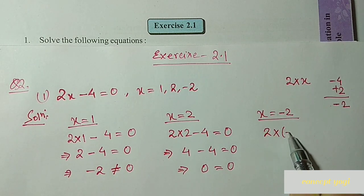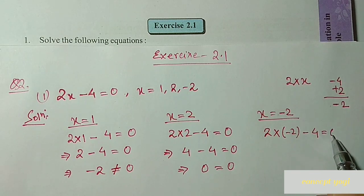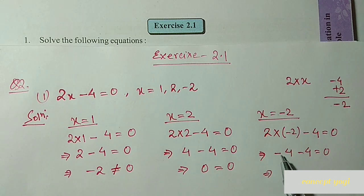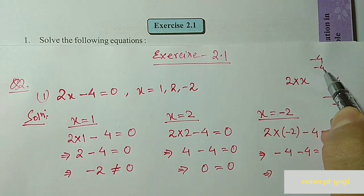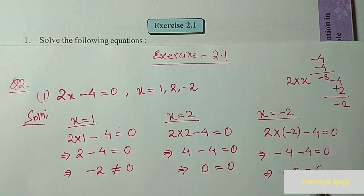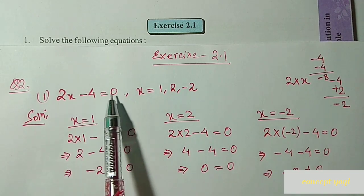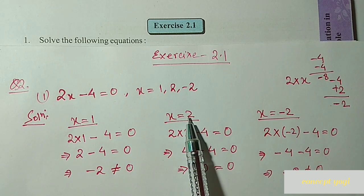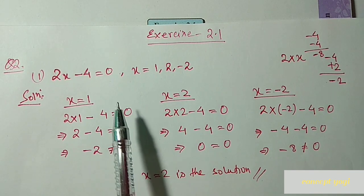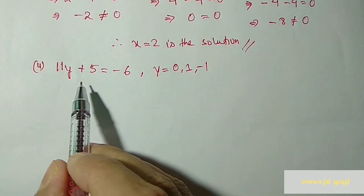Now we put x equal to minus 2: 2 into minus 2 minus 4 equal to 0. Minus into plus gives minus 4, so minus 4 minus 4 — both are negative, we add to get minus 8. Left hand side is minus 8 and right hand side is 0 — not equal. So minus 2 is not the solution. Therefore, x equal to 2 is the solution of this equation.